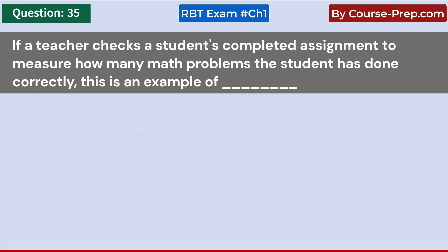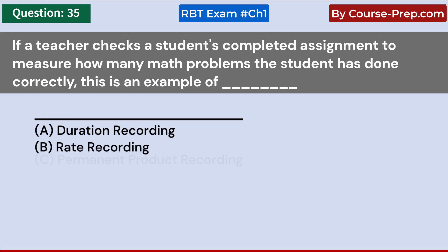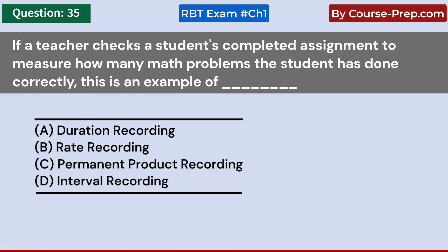If a teacher checks a student's completed assignment to measure how many math problems the student has done correctly, this is an example of: A. Duration recording. B. Rate recording. C. Permanent product recording. D. Interval recording. Answer C: Permanent product recording.